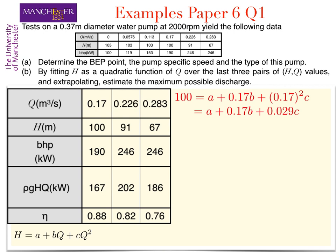Similarly for a flow rate of 0.226 we have a head of 91 meters and thus 91 is a plus 0.226b plus 0.226 squared c which can be expanded as a plus 0.226b plus 0.051c.